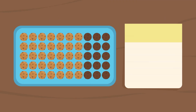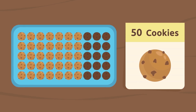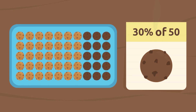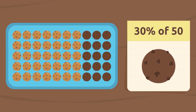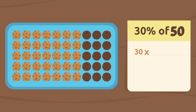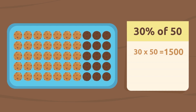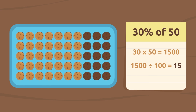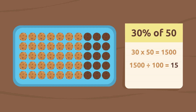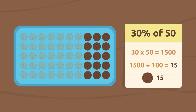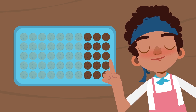I had to bake 50 cookies, but got distracted explaining percentages and 30% of my cookies got burned. How many cookies actually got burned? To find out, first we multiply 30 by 50, which equals 1500. Then we divide this result by 100, which equals 15. So if 30% of my 50 cookies got burned, that means I burned 15 cookies.